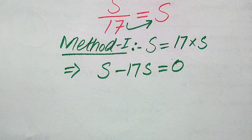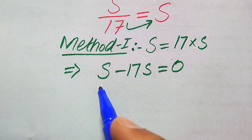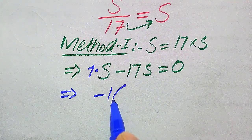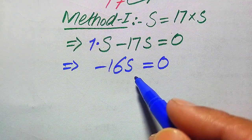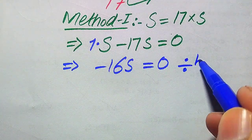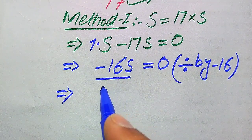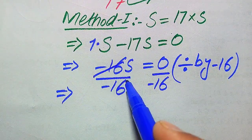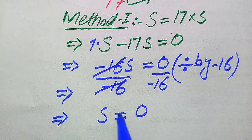These are two like terms with the same variable √s. When we subtract two like terms, we subtract their coefficients. The coefficient of s is 1, and 1 minus 17 gives minus 16, so we get −16√s = 0. To find the value of s, we remove the −16 by dividing both sides by −16. The −16 cancels out, giving s = 0 ÷ (−16) = 0.